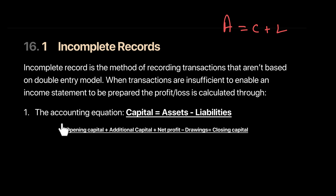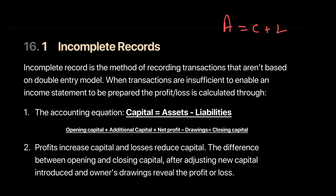For closing capital: opening capital plus any capital invested, plus profit for the year, minus drawings equals closing capital. Remember, profits increase your capital whereas losses reduce your capital. The difference between your opening capital and closing capital, adjusted for new capital introduced and owners' drawings, should reveal the profit or loss.